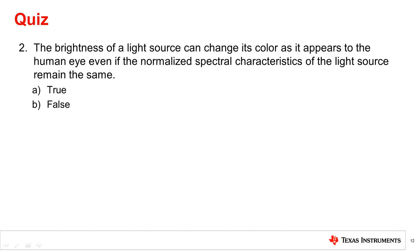Question 2. The brightness of a light source can change its color as it appears to the human eye, even if the normalized spectral characteristics of the light source remain the same. This is false. If a light source with the same normalized spectral characteristics is set to two different brightnesses, one in the scotopic and one in the photopic region, then the response of the human eye will shift.